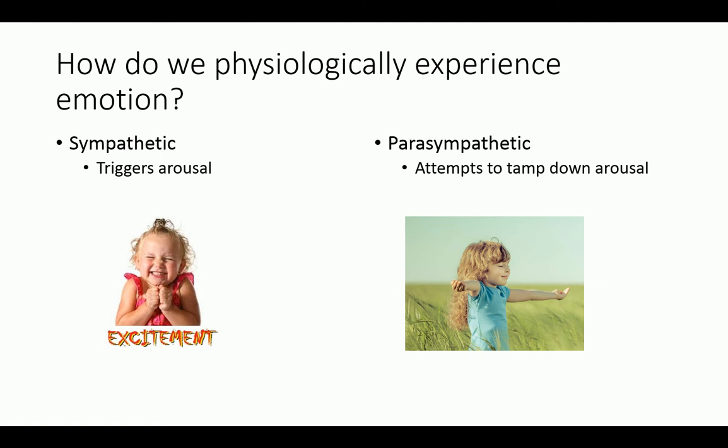Now that we've talked about and described emotions and primary and secondary emotions, let's discuss how we physiologically experience emotions. We have two kinds of nervous systems at play here: a sympathetic nervous system and a parasympathetic nervous system. Our sympathetic nervous system attempts to trigger arousal, and our parasympathetic nervous system attempts to tamp down arousal.